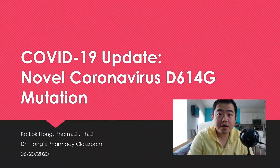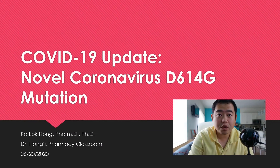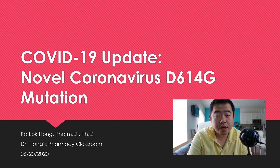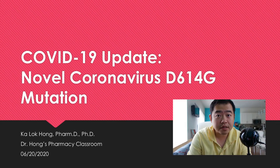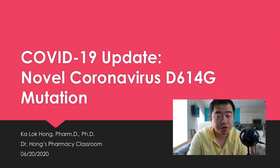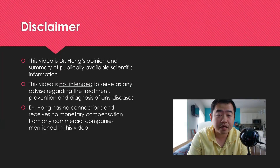Without further talking, let's go to the screen. Alright guys, here we are looking at another update episode on COVID-19. Today we are going to talk about a specific mutation called D614G. We will look at it closely — what this D614G is, what it does to the virus, and what the implications are.